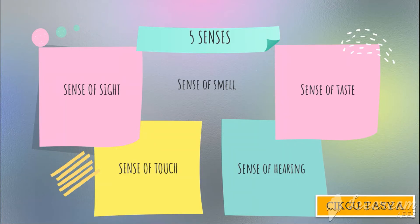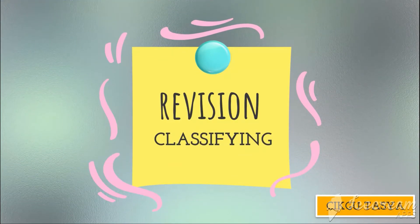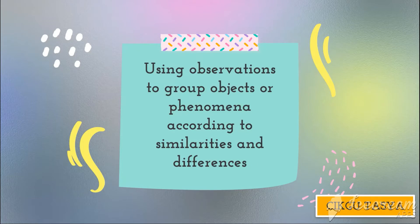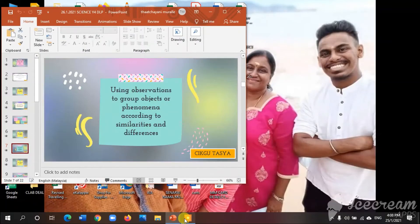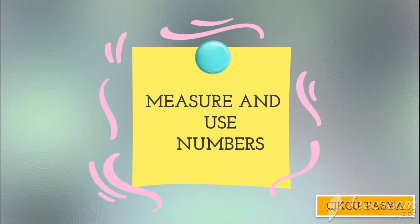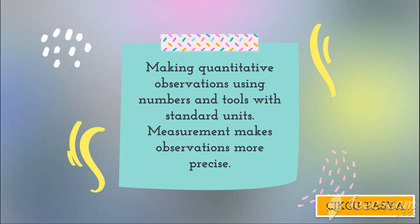Next is classifying. Classifying means using observation to group objects or phenomena according to similarities and differences. We group objects using their similarities and differences according to their characteristics. Now let's go to today's main topic, which is measure and use numbers.